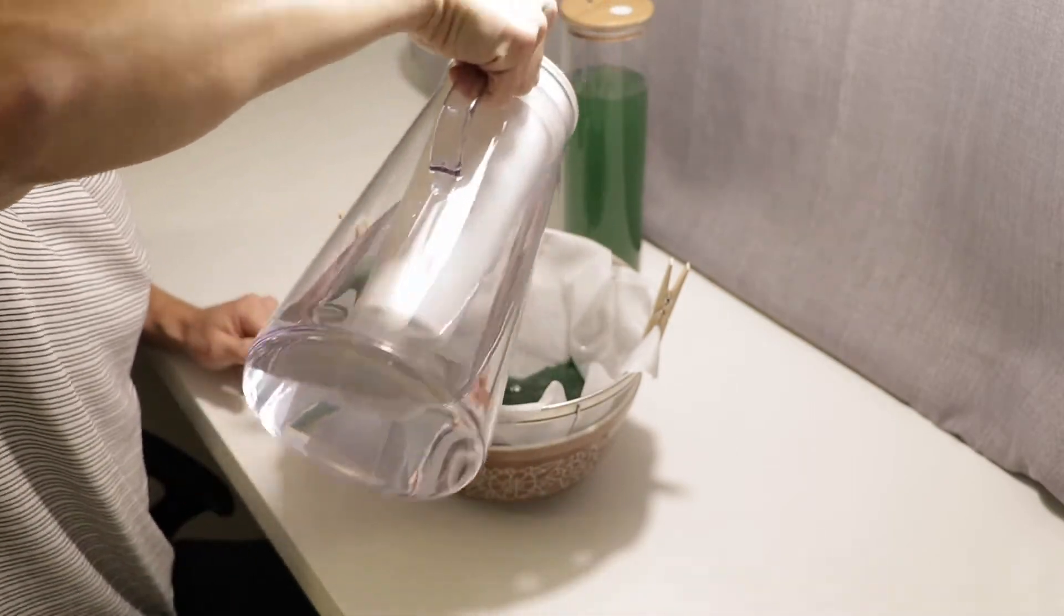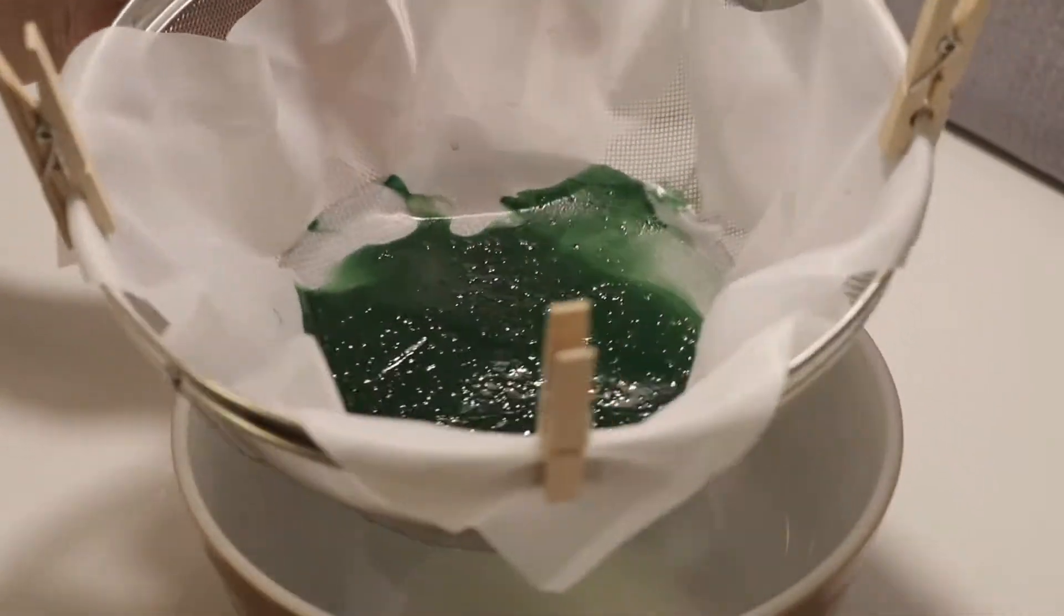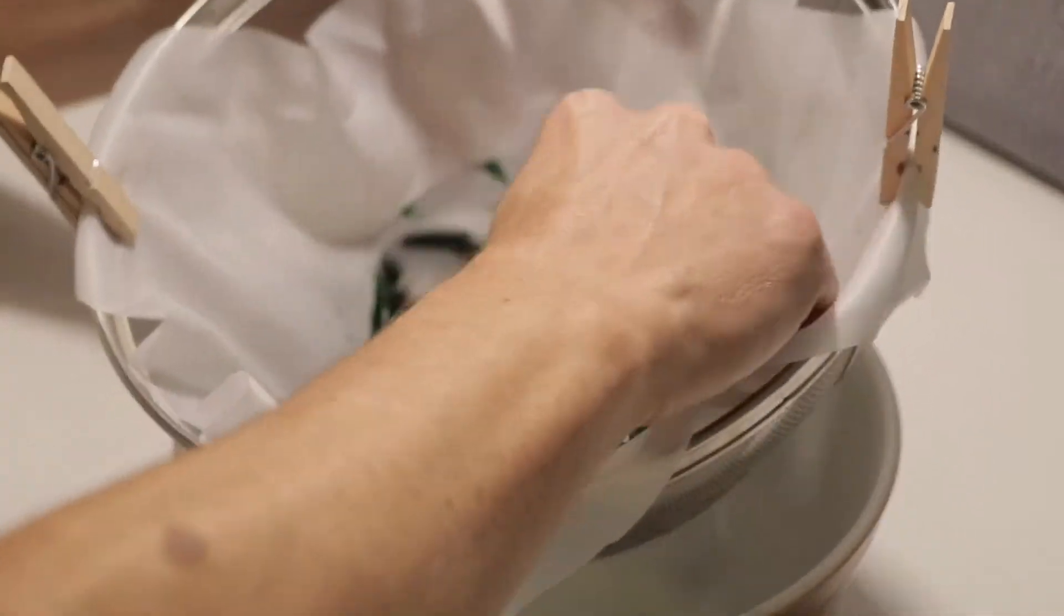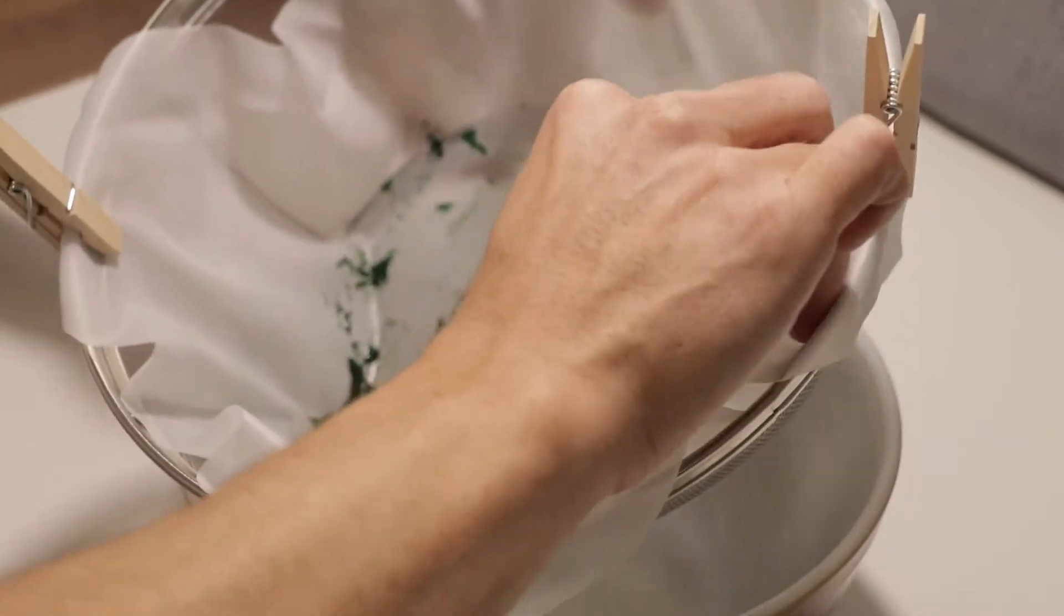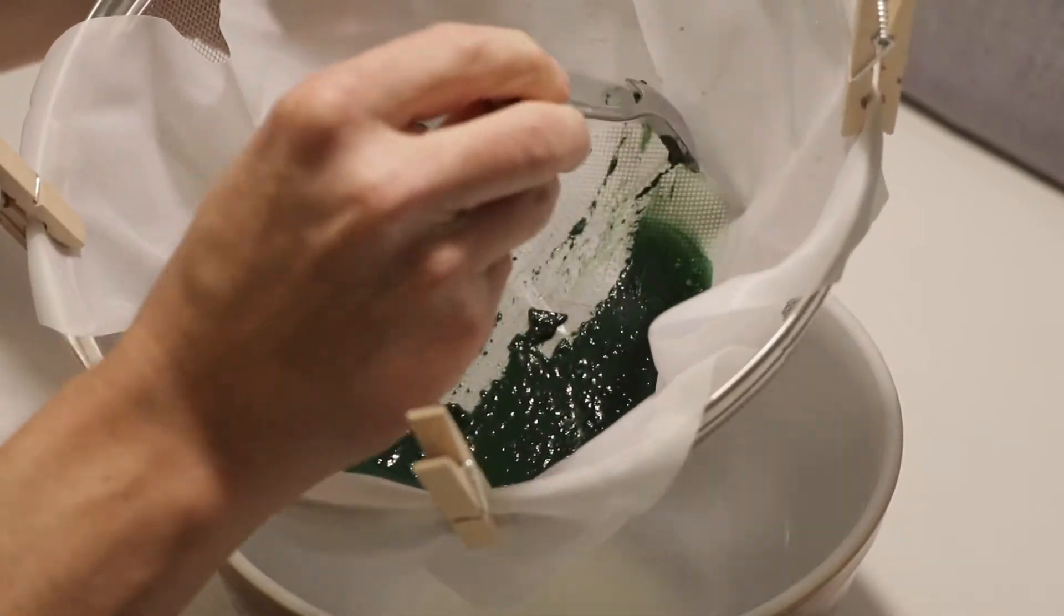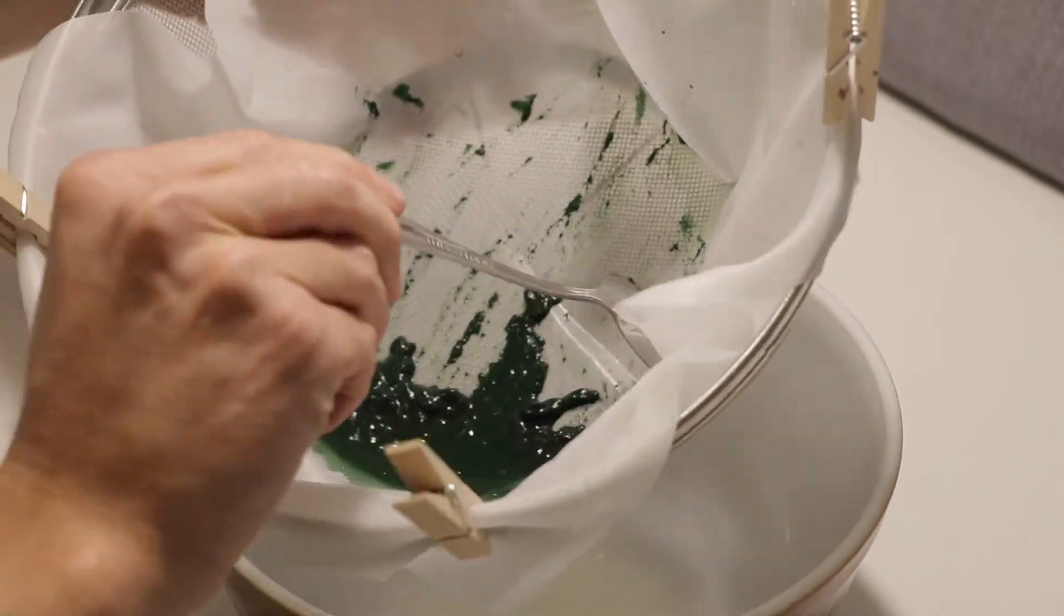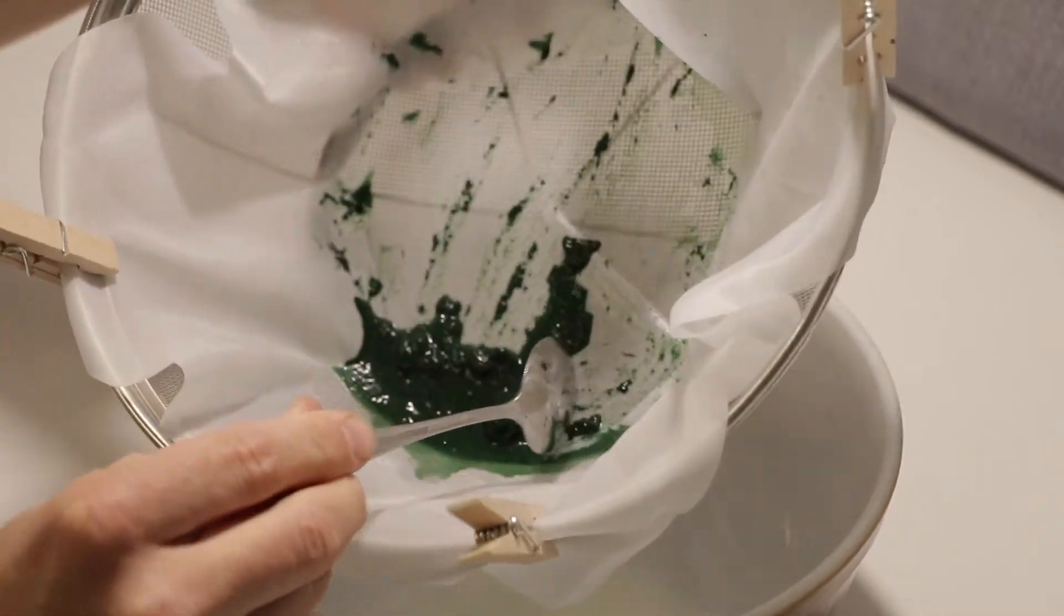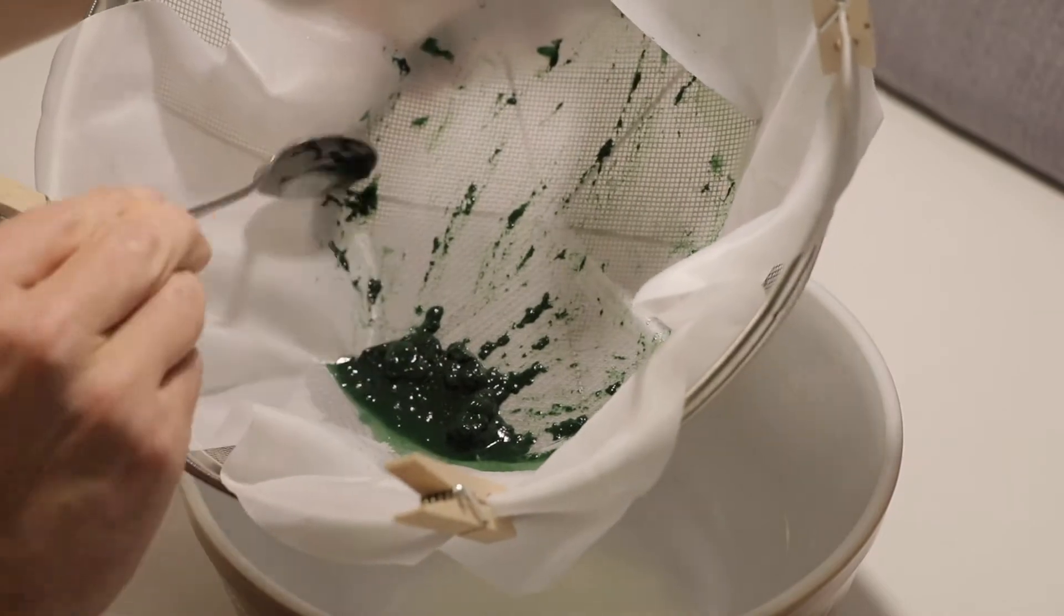Step seven is to pour the water back into your tank. After that rinse the spirulina with filtered water to remove the sodium bicarbonate from the spirulina you harvested. If you don't rinse the spirulina with filtered water it's still alkaline and it's not something that you can eat right away.